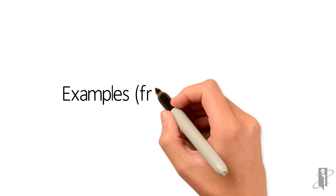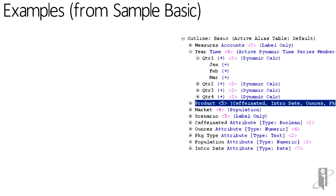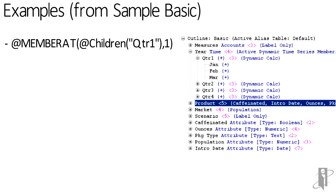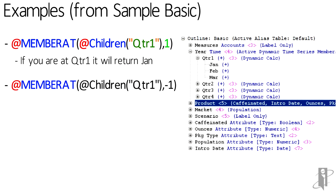Let's look at some examples from Sample Basic. We're going to be using the Year dimension, specifically Quarter One. If I do Member At the children of Quarter One with index 1 — a positive number — I'm going to get back Jan. If I do the children of Quarter One with index minus one, I'm going to get the last member, so I'm going to get back Mar.